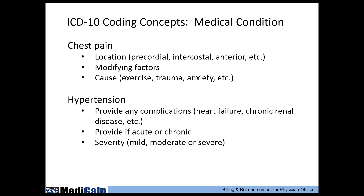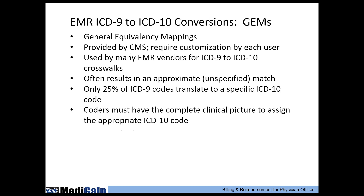For chest pain, location is very important — note specifically where it occurs and any modifying factors or cause if known. For hypertension, link up with any complications using a combination code. Identify if it's acute or chronic, and document the severity of the hypertension.